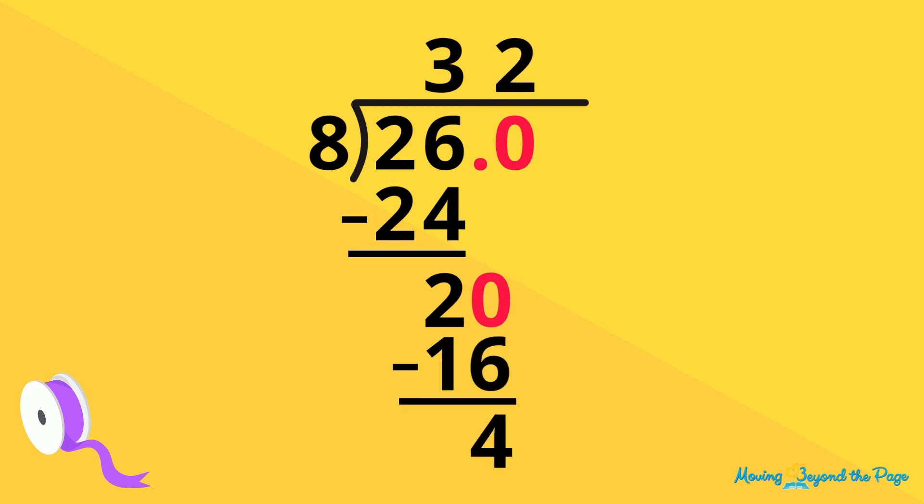And since there's still a remainder, add another 0 to the dividend, and then bring down that 0. 8 goes into 40 five times. There's no remainder.